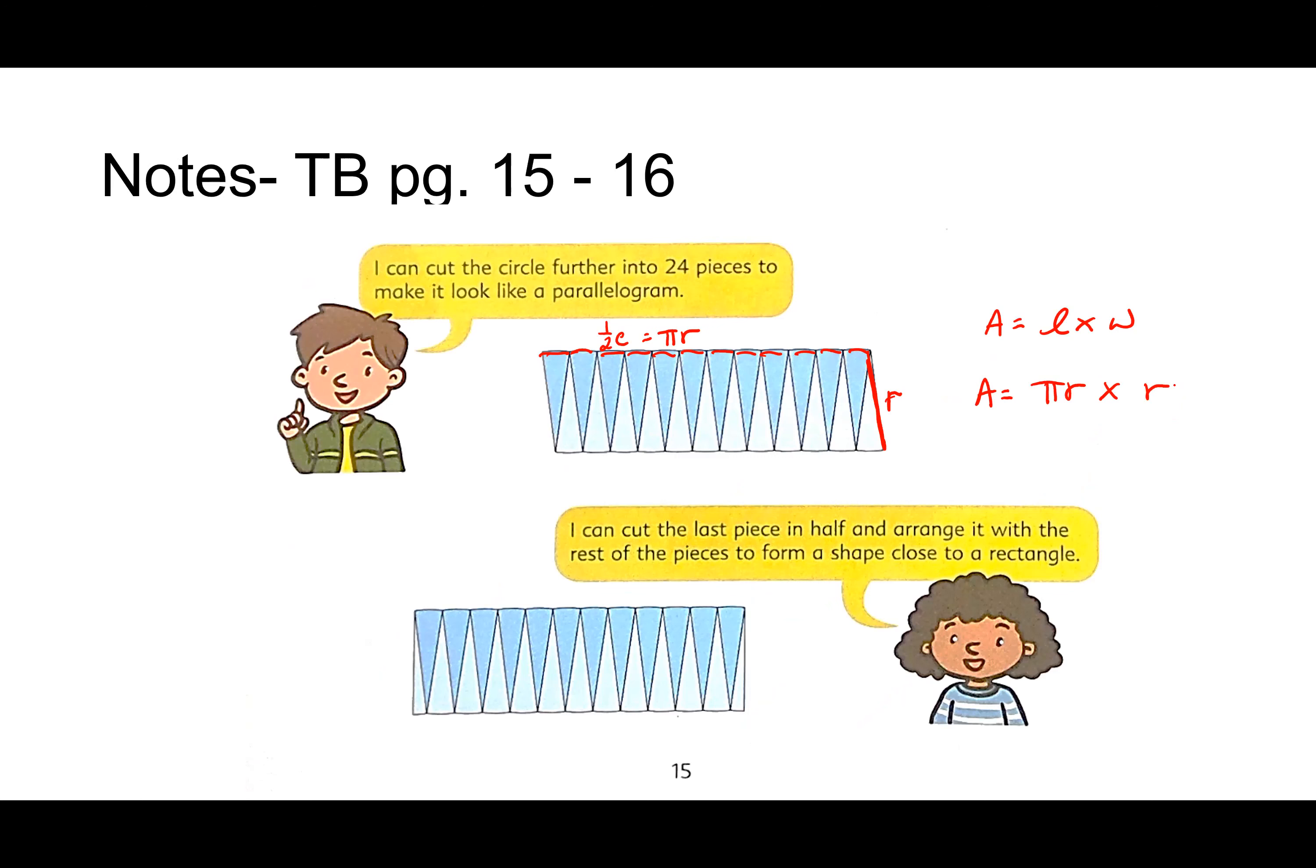So we've got pi R up here along one edge, and we've got R down here along the other edge. Can you guys start to see? Are you seeing it yet? So the way that we're going to find the area of a circle is exactly the same as the area of a rectangle. It's length times width. However, with a circle, our length is pi R, and our width is R. You guys see it?